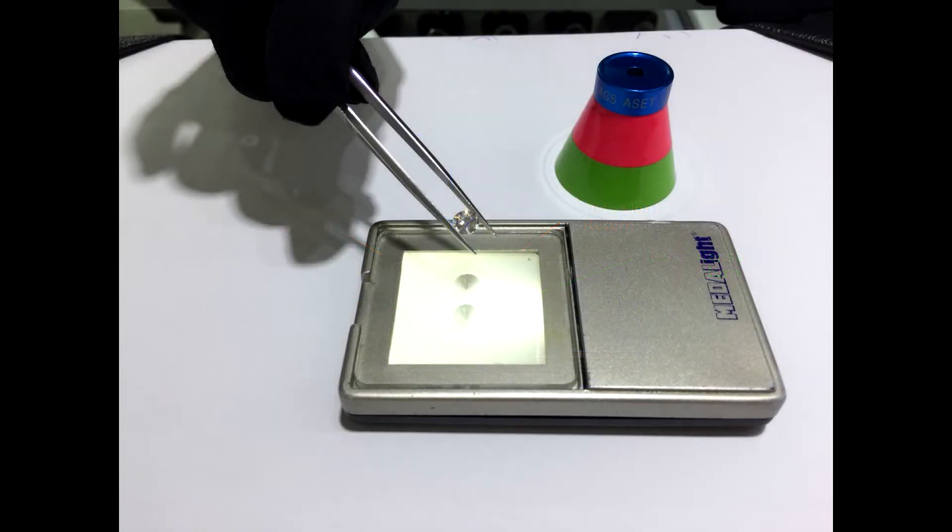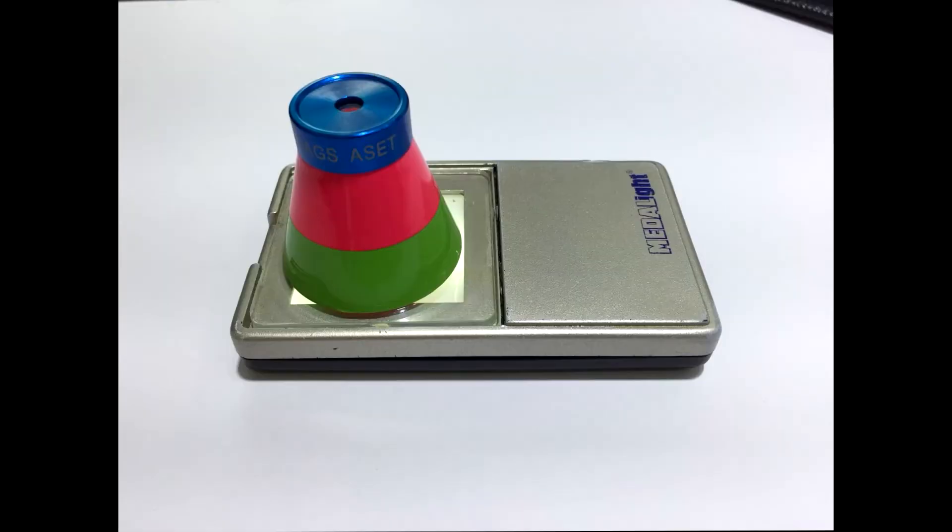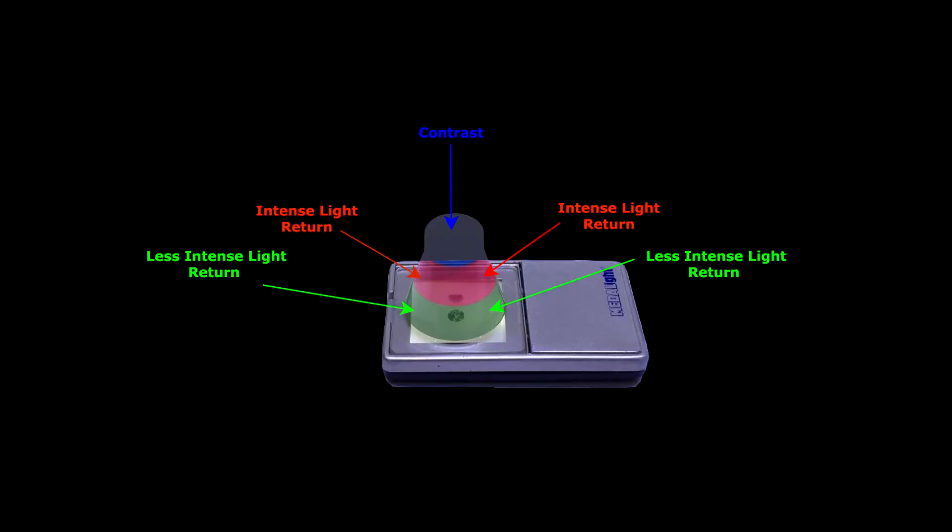How this works is by placing the diamond on a littered background and the ASET scope on top of it. The light from the littered background will bounce off the scope into the diamond and back out into your eyes.